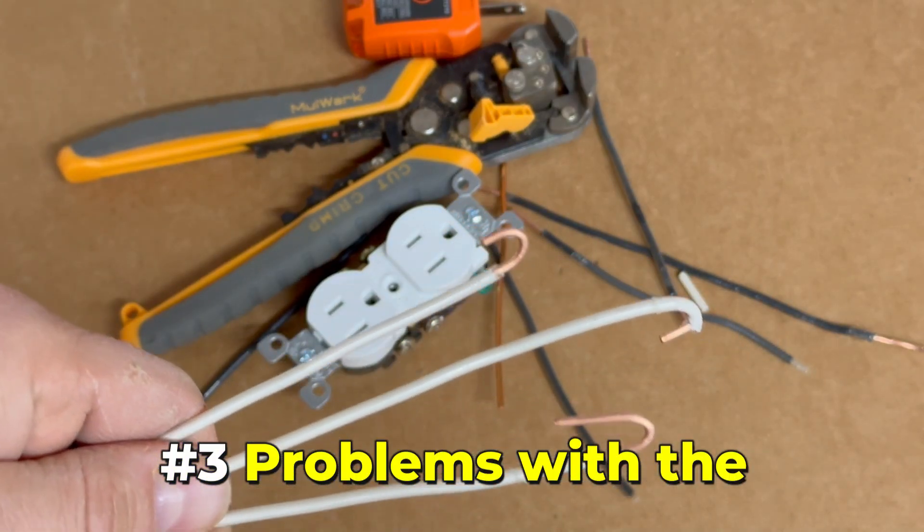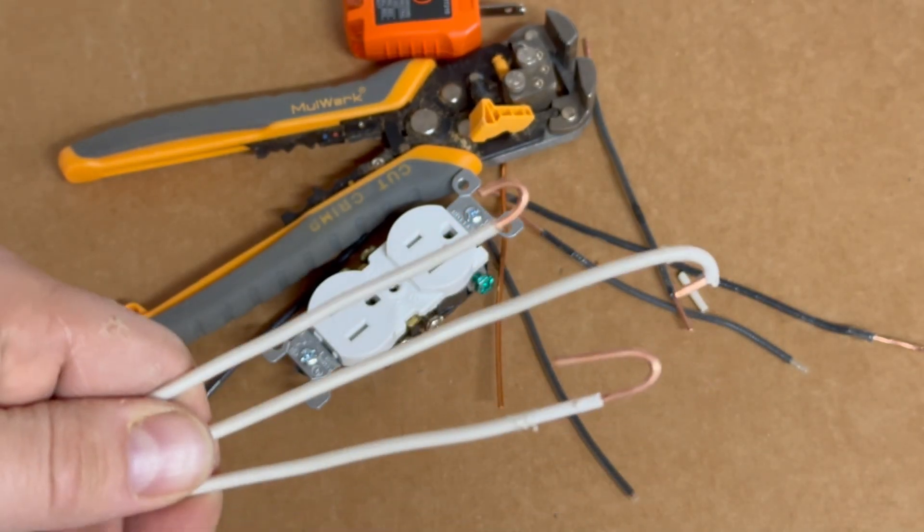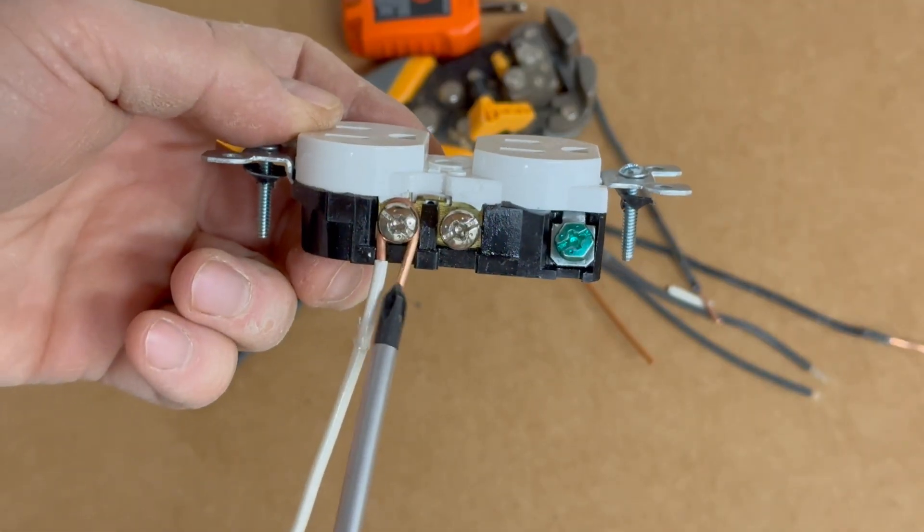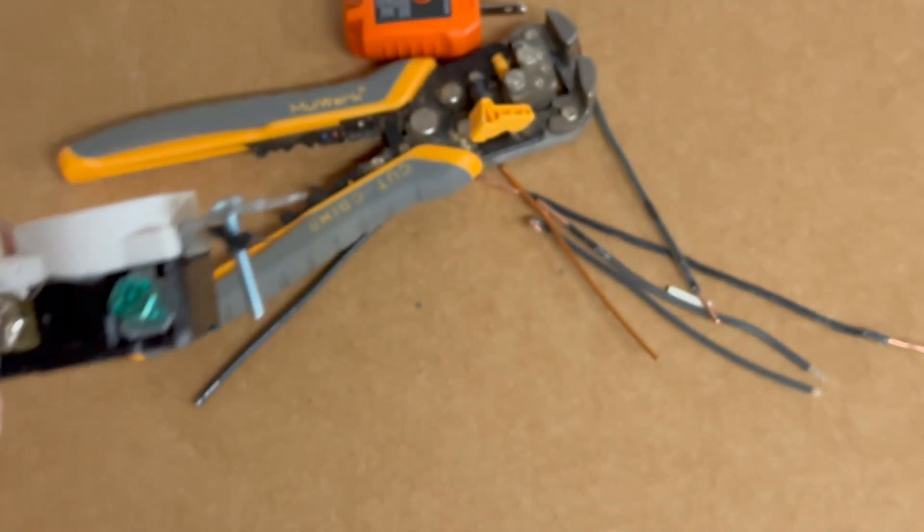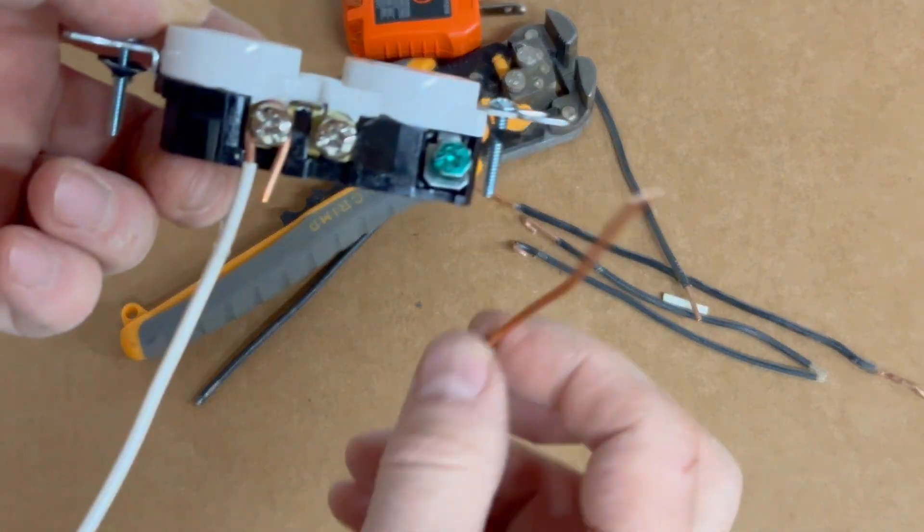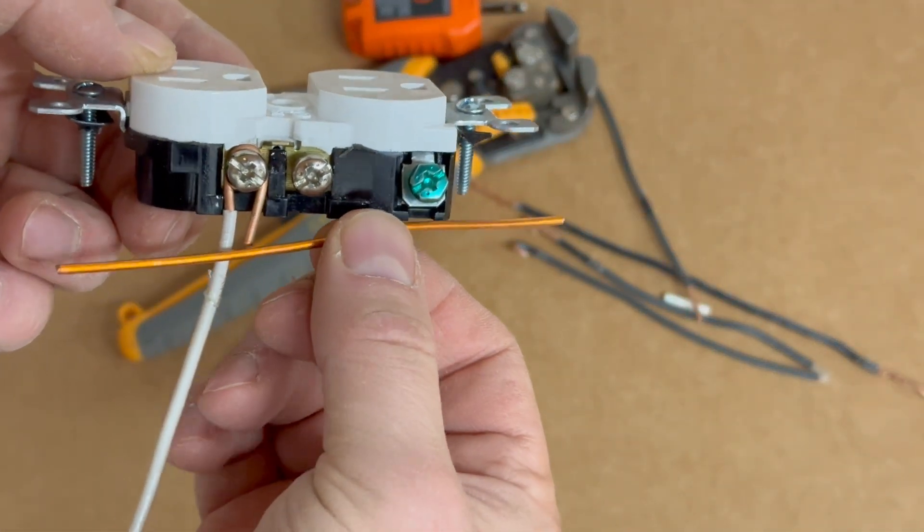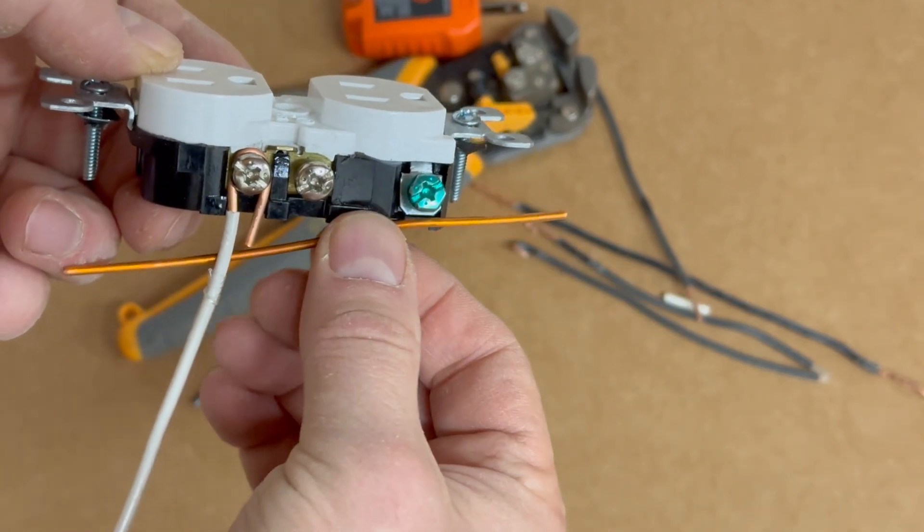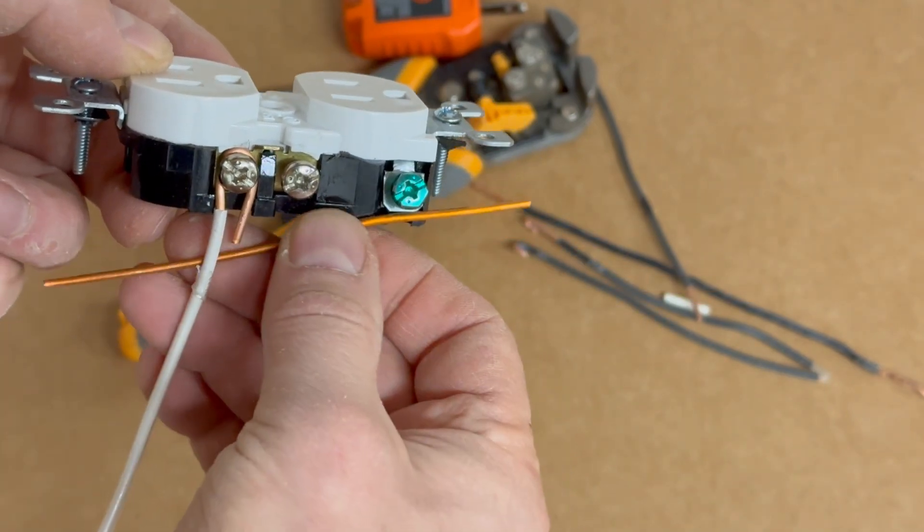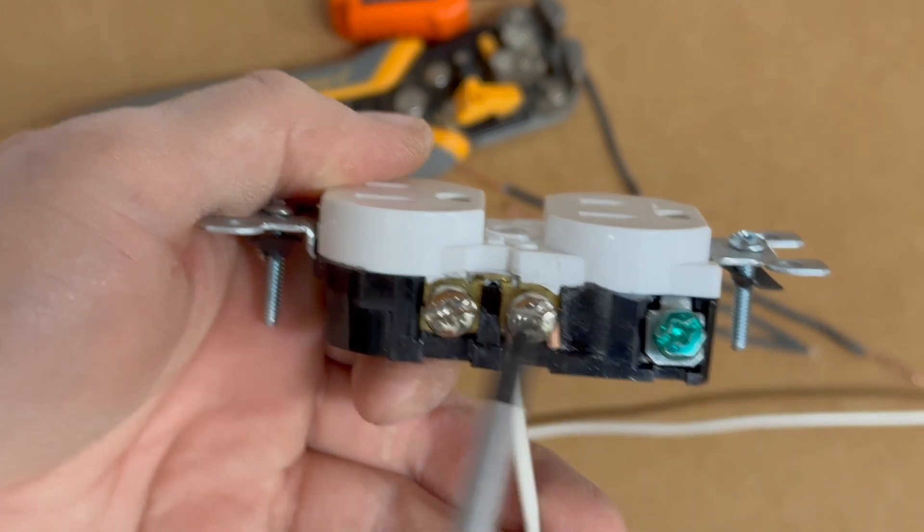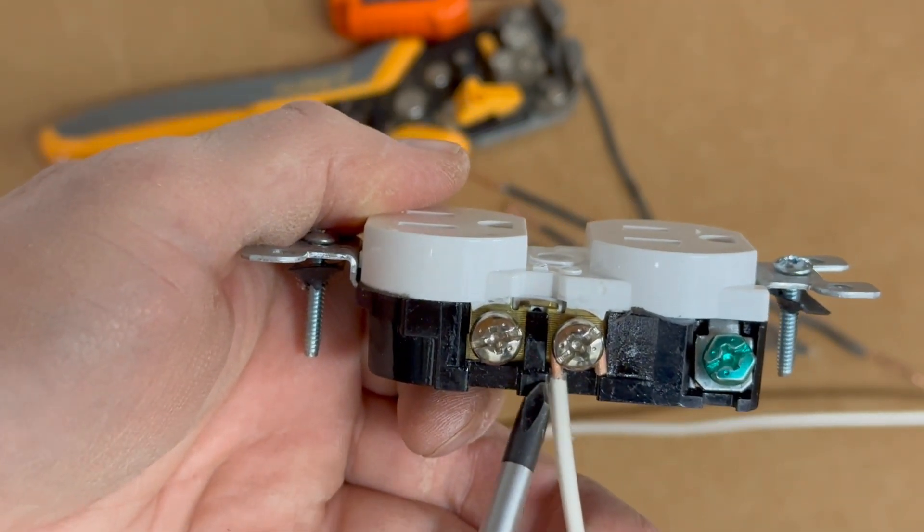Common wiring mistake number three: problems with the hook. If you strip too much wire, the excess will stick out past the outlet. While this might still work, it won't provide a proper connection and could potentially short out if it comes into contact with other components or with other wires. The correct amount of insulation to remove is three-quarters of an inch when making a hook.